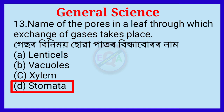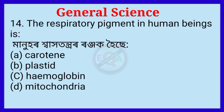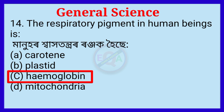Question number 14. The respiratory pigment in human beings is? Manuhar saktantar anja haise. Huddha apsan habo. Apsanthi hemoglobin.